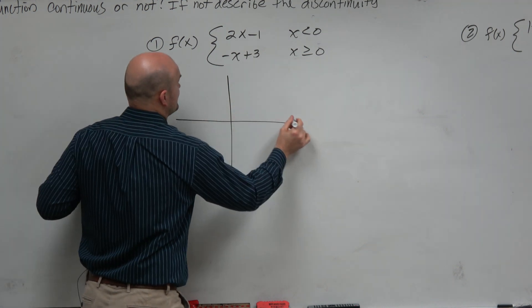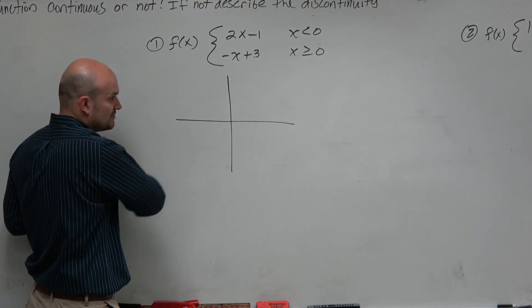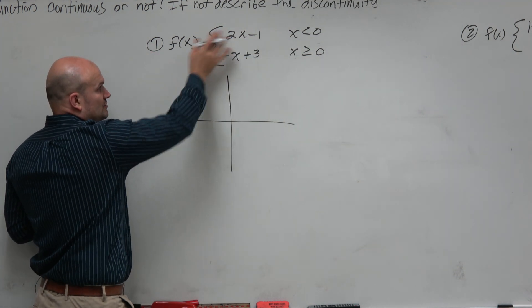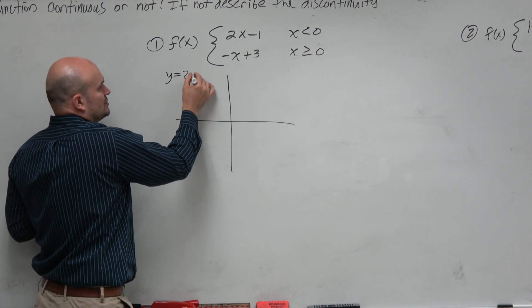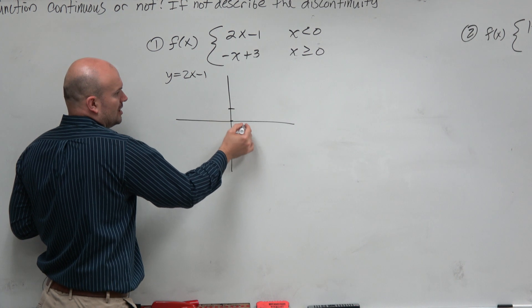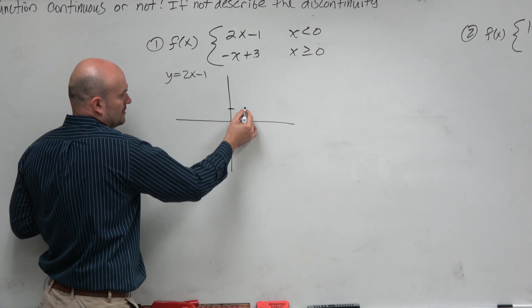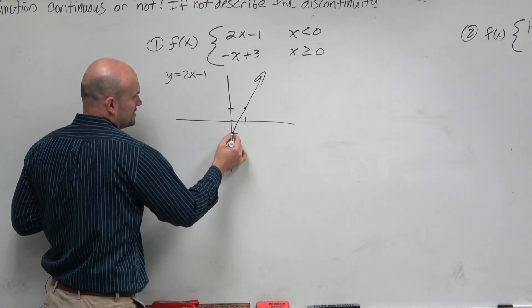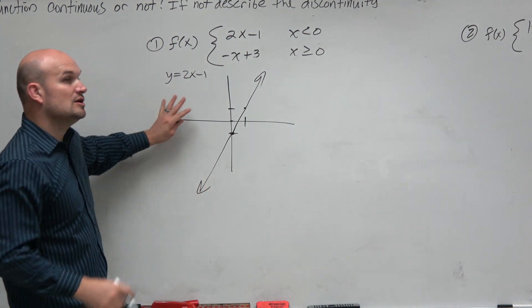We basically have two lines here. Let's graph 2x minus 1. Forget about the restriction for a second. Let's just graph y equals 2x minus 1. I go down, that's my y-intercept, up 2 over 1. I can go in the positive direction and the negative direction. That is the graph.